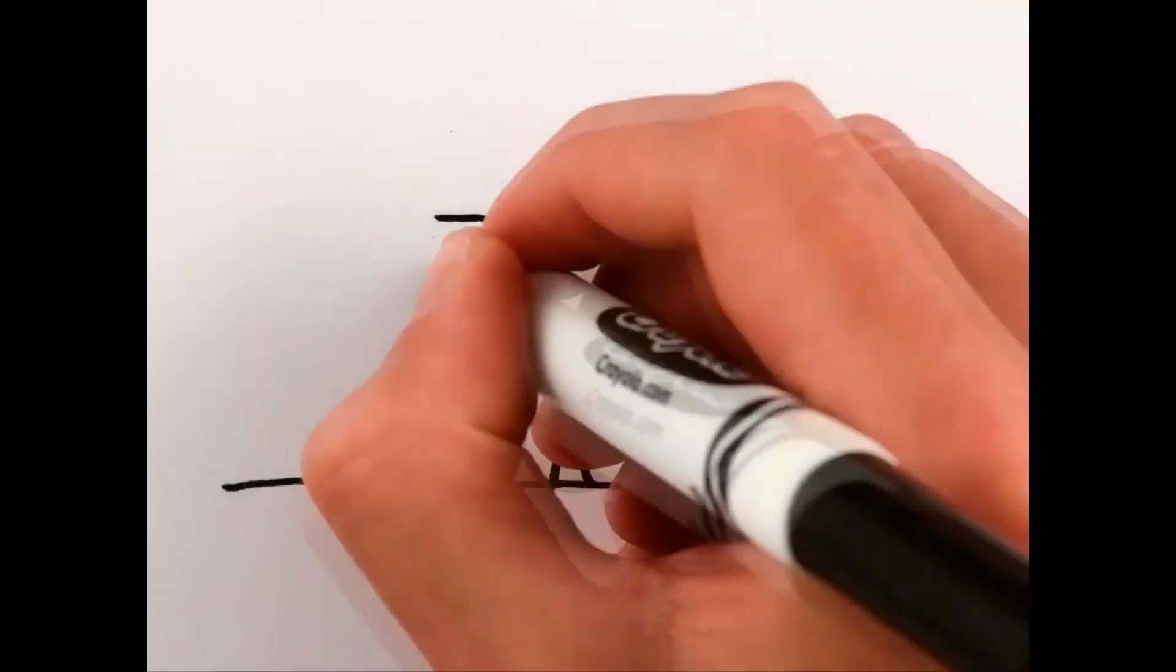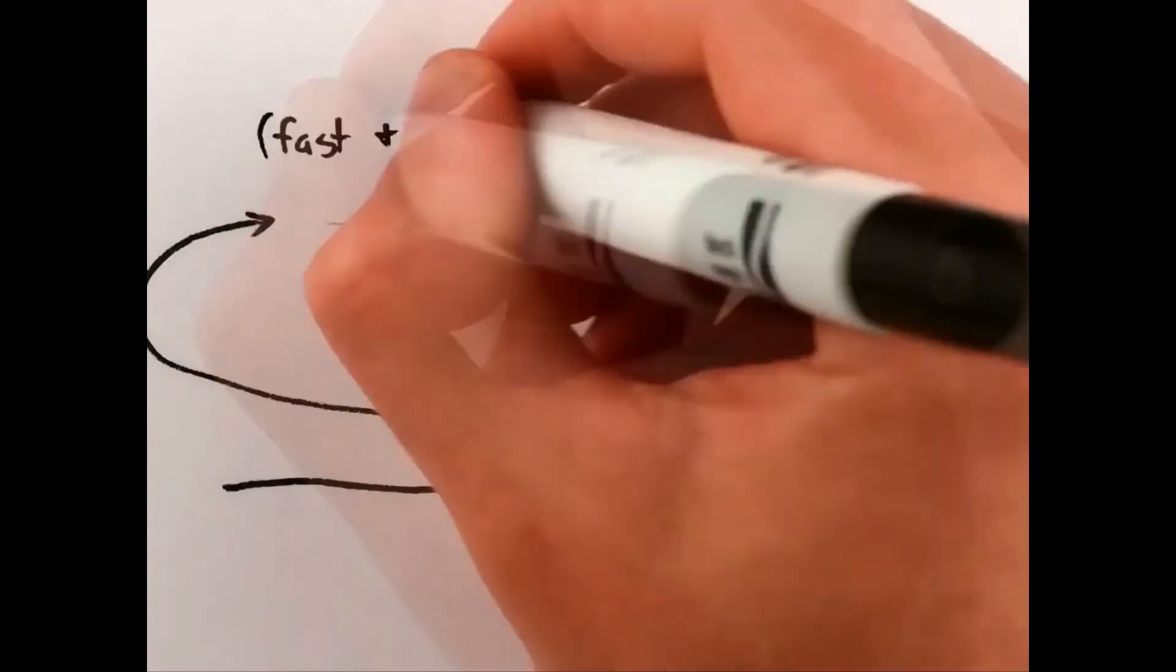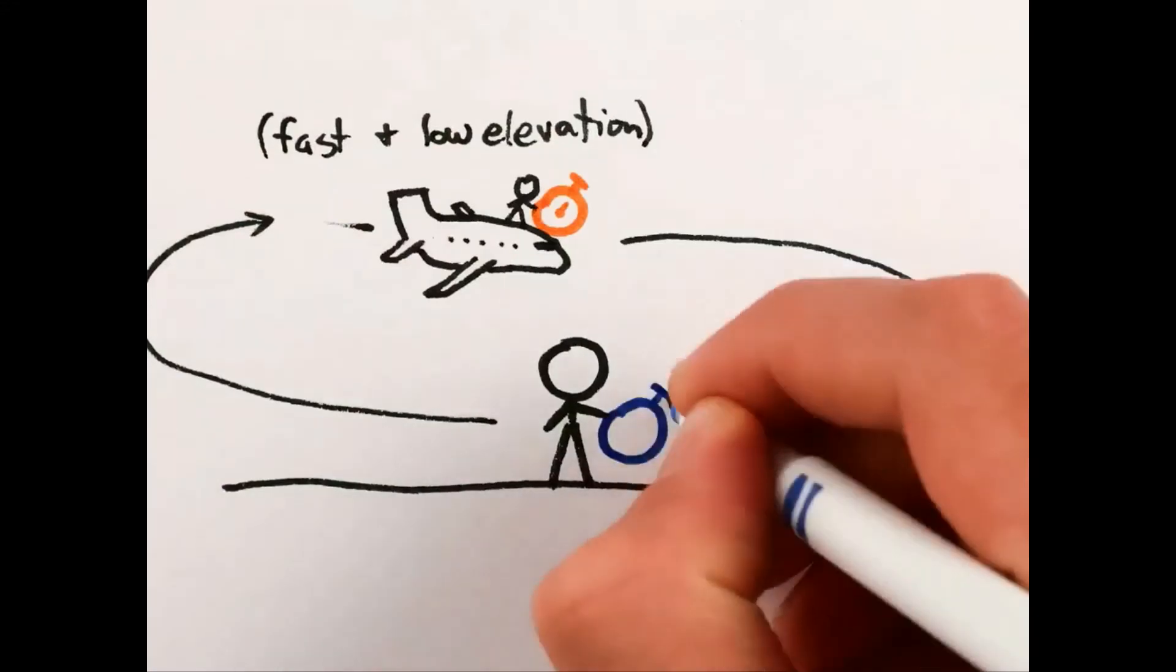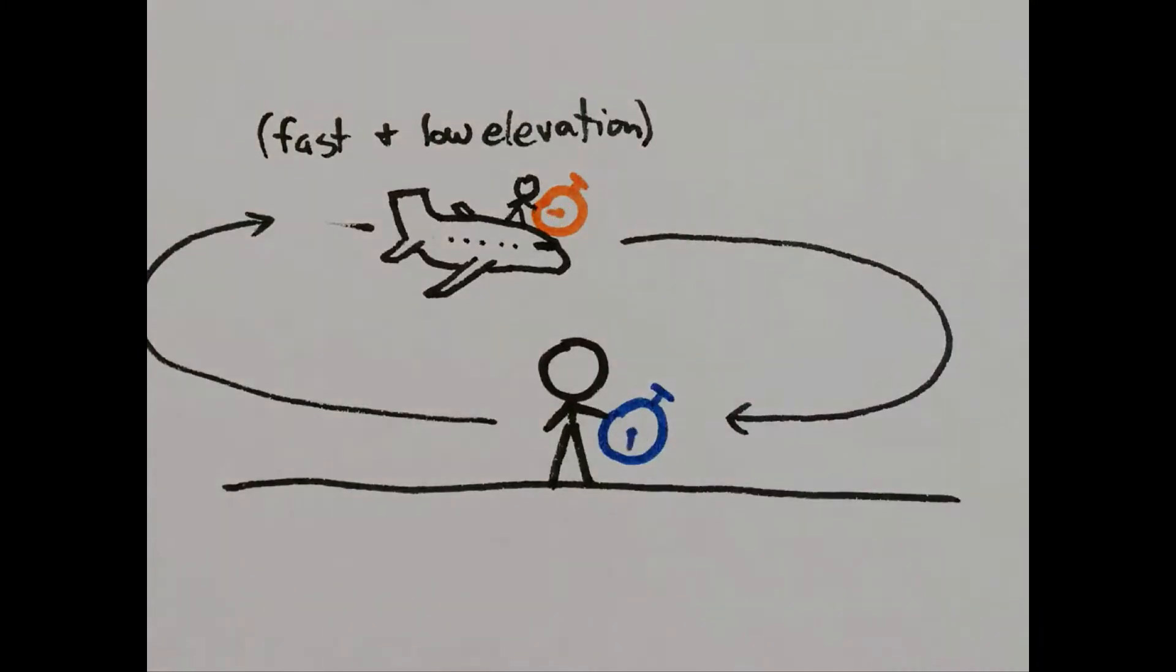Another example is when you set an atomic clock flying into the airplane and an observer from Earth records the time that the airplane takes while flying. It records longer time in the clock of the observer on Earth than to the clock that is in the flying airplane.